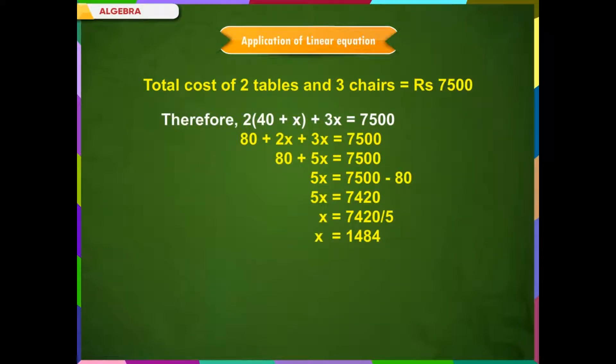2 into (40 plus x) plus 3x is equal to 7,500. 80 plus 2x plus 3x is equal to 7,500. 80 plus 5x is equal to 7,500.